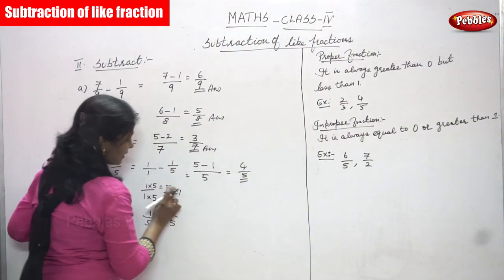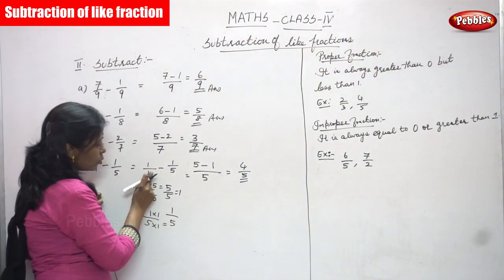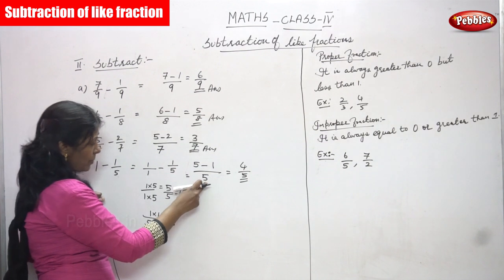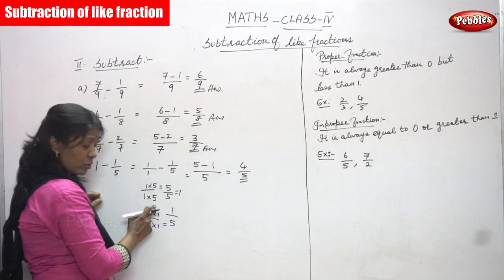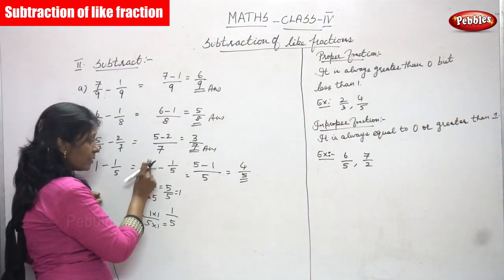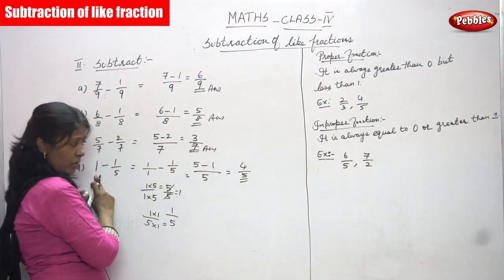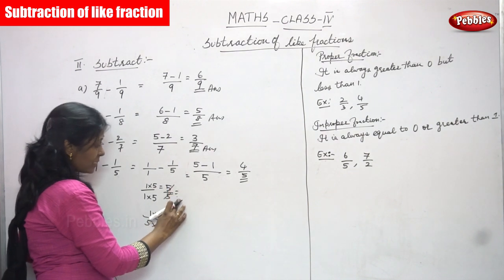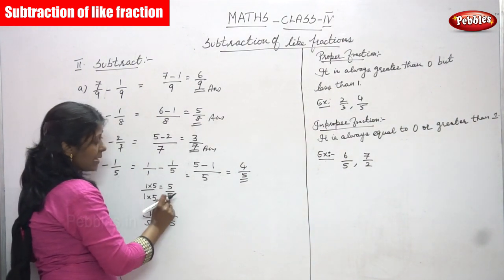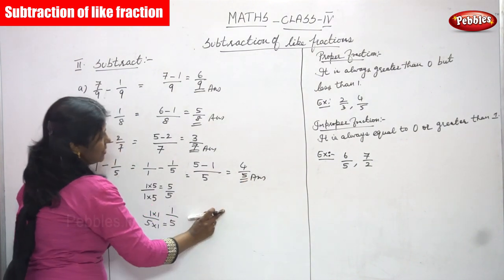So the answer is 5 minus 1 = 4, giving 4/5. To summarize: since 1 is written as 1/1, you need to make the assumed denominator equal to 5 — the common denominator or LCM. Multiply both numerator and denominator of 1/1 by 5: 1 × 5 = 5, so you get 5/5. Then 5 minus 1 gives 4/5, which is the right answer.